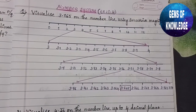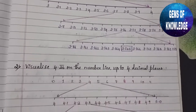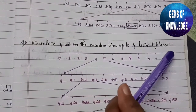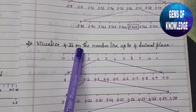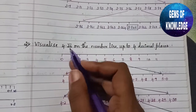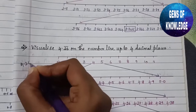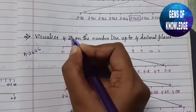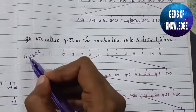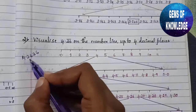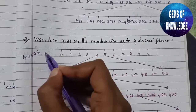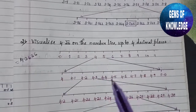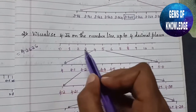Moving on to the next question: visualize 4.26̄ on the number line up to 4 decimal places. Up to 4 decimal places means 4.26̄ can be written as 4.2626, where 26 repeats. So we need to represent 4.2626 on the number line. I have drawn a basic number line starting from 0, 1, 2, 3, 4, 5, 6 and so on.